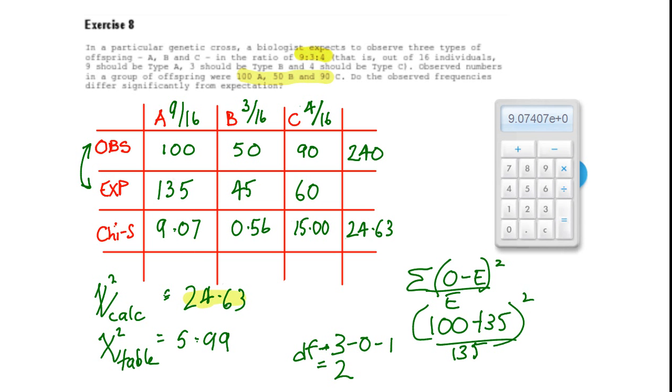Our calculated value of chi-squared is greater than the value from the table, so we will reject the null hypothesis and conclude that the observed values do not match the expected values.